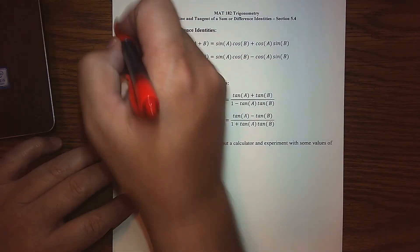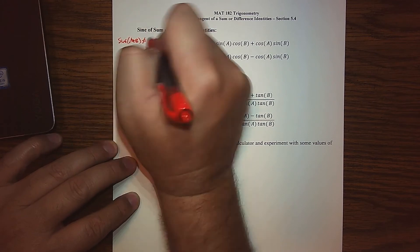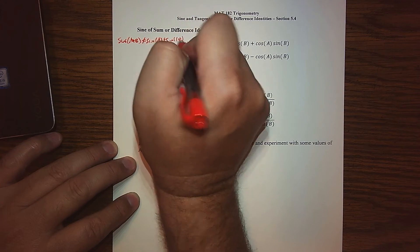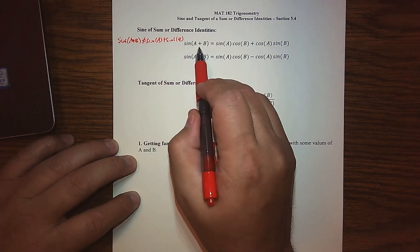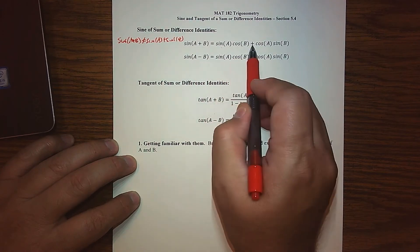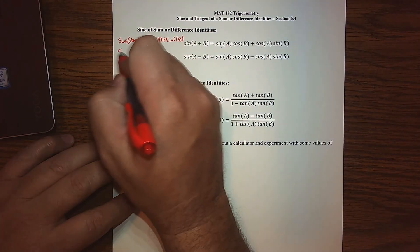Fight the urge again, the common mistake is to say that the sine of A plus B is the sine of A plus the sine of B. That is just like the cosine, that is not true. The sine of the sum is basically the sine of the first angle, cosine of the second, plus the cosine of the first, the sine of the second.